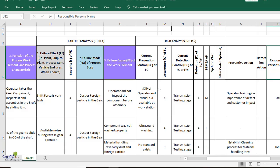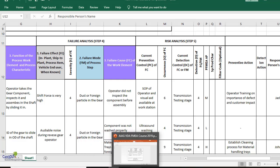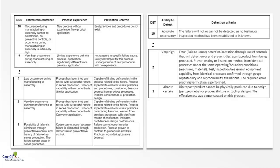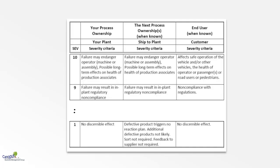Rating scales have not changed much — like DFMEA, in PFMEA also the rating scales have not changed. This is the rating scale for severity; this is a partial list. We will be giving a rating for severity, which is associated either with the plant, with the next stage that is shipping, or with the end user. We would look at relevant columns to give the rating for severity.